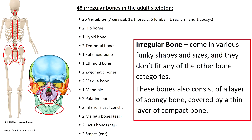Finally we have the last major category: irregular bones. These come in various shapes and sizes and don't fit into any other bone category, so they are placed in their own category. These also consist of a layer of spongy bone covered by a thin layer of compact bone. There are 48 irregular bones in the adult skeleton, including the hip bones, the vertebrae, the hyoid bone, and some skull bones.